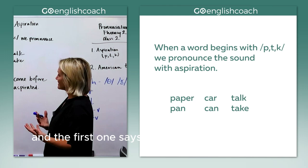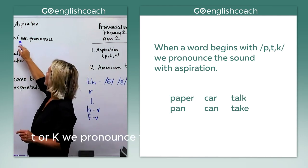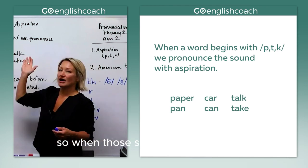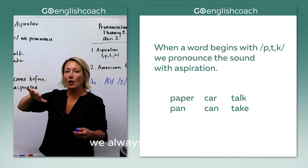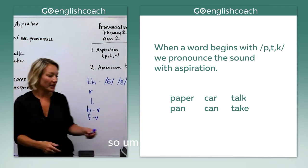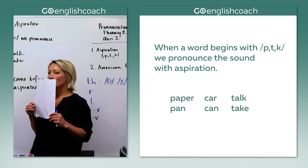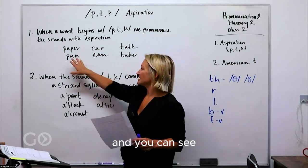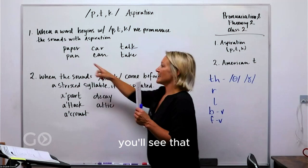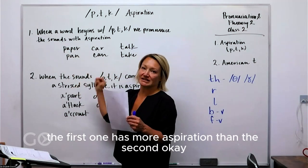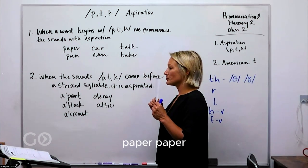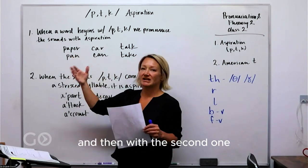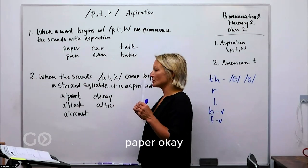The first rule says: when a word begins with P, T, or K, we pronounce the sounds with aspiration. When those sounds are the first sound in the word, we always aspirate. For example, 'paper' — this word actually has two P's, and you can see the first one has more aspiration than the second. Paper, paper — I'm pushing a little more with that first one.